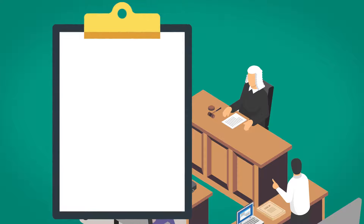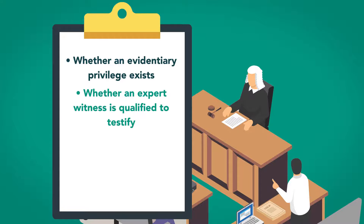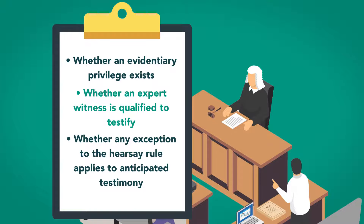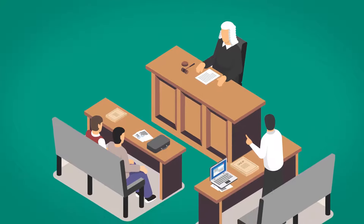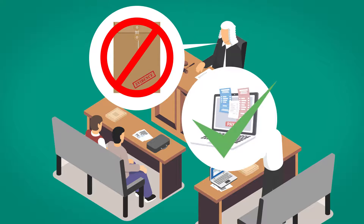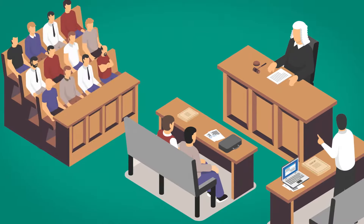These determinations may include, for example, whether an evidentiary privilege exists, whether an expert witness is qualified to testify, and whether any exception to the hearsay rule applies to anticipated testimony. The preliminary hearing promotes trial efficiency, because a judge can exclude certain evidence and settle on the admissibility of other evidence at the outset. This can also ensure that confusing evidentiary arguments don't take place in front of the jury, which could otherwise potentially confuse and bias them.